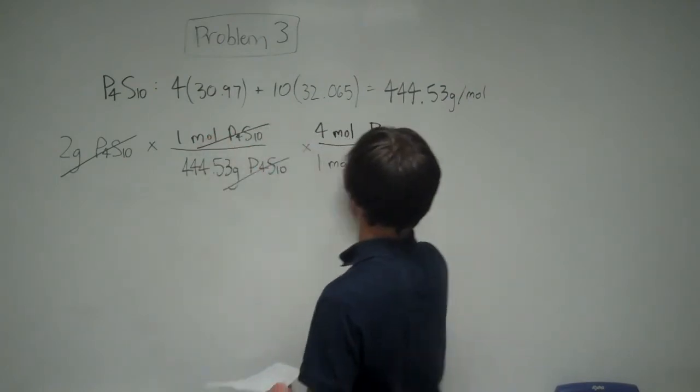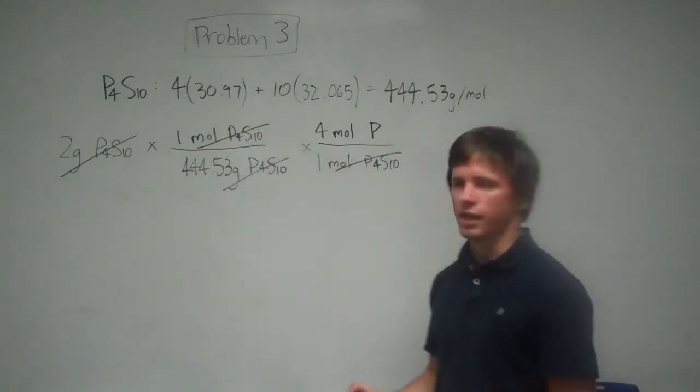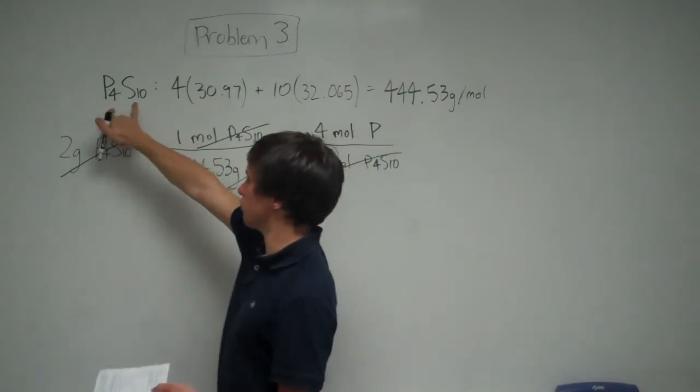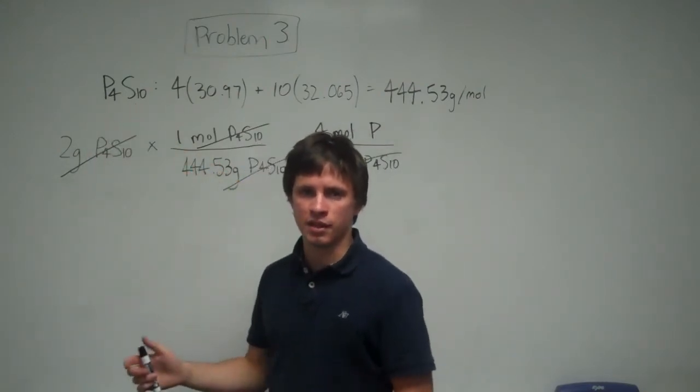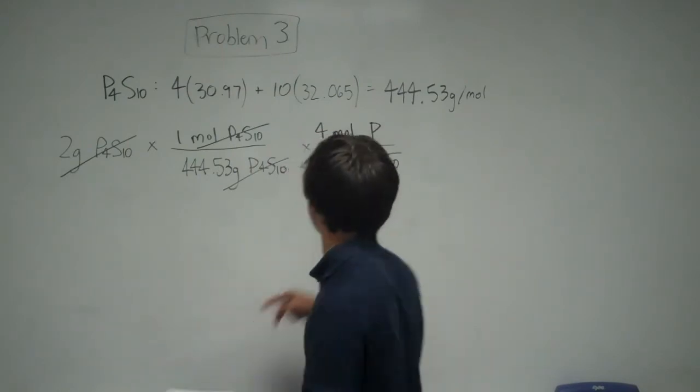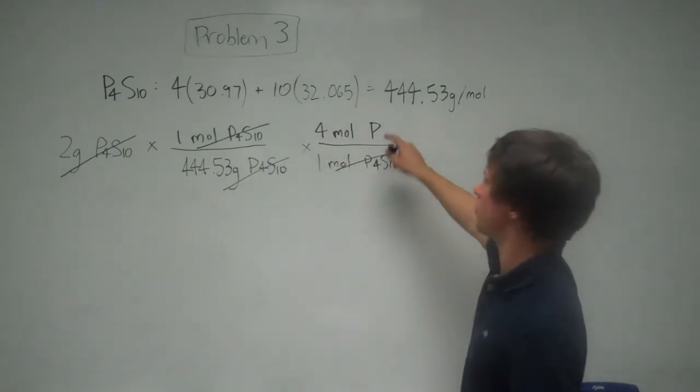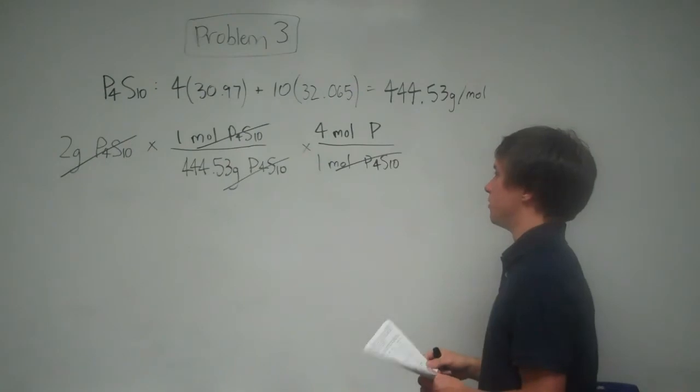So that'll cancel out with that. This is true because just look at the molecular formula. Every time you have one P4S10, you get 4 Ps from it. So you have 4 moles of P for every 1 mole of P4S10.